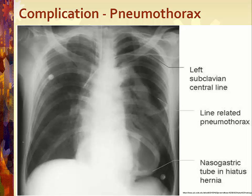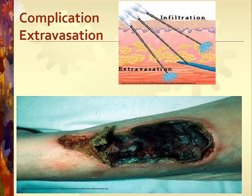Catheter migration or displacement can also happen. Clinical symptoms include sluggish infusion or aspiration, edema of the chest or neck during infusion, the patient complaining of a gurgling sound in the ear, or dysrhythmias. The central venous access device will need to be removed and may need to be replaced. Extravasation injury refers to damage caused by leakage of solutions from the vein to the surrounding tissue spaces during IV administration. Once extravasation has occurred, damage can continue for months and involve the nerves, tendons, and joints. If treatment is delayed, surgical debridement, skin grafting, and even amputation may be a consequence.